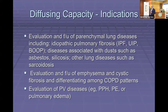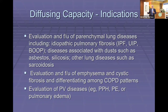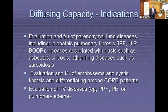So what is the utility of this particular test? We use it to evaluate abnormalities at the alveolar-capillary interface. Anything that affects the lung parenchyma — all of the pneumoconioses, pulmonary fibrosis, asbestosis, silicosis — anything affecting the lung parenchyma, we want to use this test to evaluate the effect of that disease.